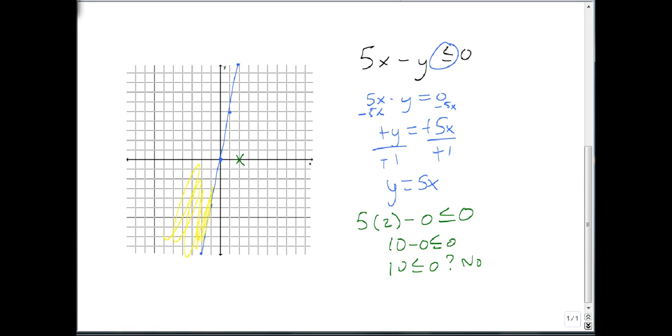And again, I shade the other side. Now notice, if I had selected the appropriate side, say (-2,0), then we would have had 5 times negative 2 minus 0, which is negative 10 minus 0. And notice that negative 10 is less than 0. Since that's true, I shade that side.